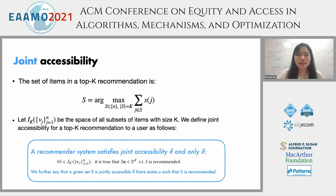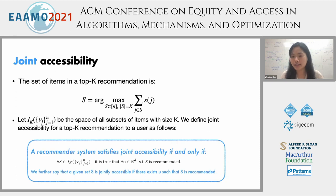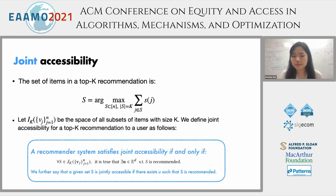By joint accessibility, we mean: consider a top-k recommendation where the recommendation set consists of the top-k items with the k highest ratings. A recommender system satisfies joint accessibility if and only if for any set of k combinations, there exists a user vector such that this set could be recommended. This notion captures whether, for any given user representation, a set is possible to be recommended. This is a weak requirement: we are just asking whether, over the entire user representation space, a given set can even possibly be recommended together. We further say that a set S is jointly accessible if there exists a user vector such that S is recommended.